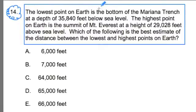The lowest point on earth is at the bottom of the Mariana Trench at a depth of 35,840 feet below sea level. The highest point on earth is the summit of Mount Everest at a height of 29,028 feet above sea level. Which of the following is the best estimate of the distance between the lowest and the highest points on earth?